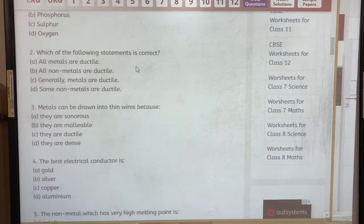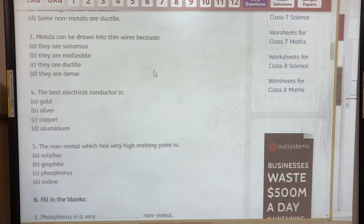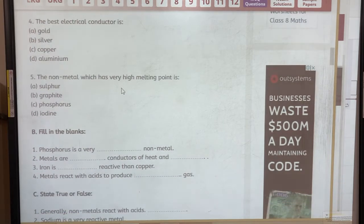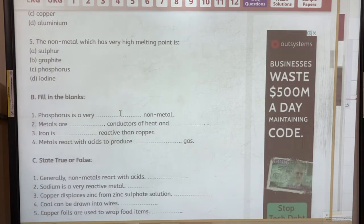Next question is which of the following statement is correct? I am not going to tell you this thing. You answer it and answer it in the comment section. Then metals can be drawn into thin wires because what is it? So you have to find the answer. The best electrical conductor is, if you watch my video I have told it to you. So you have to watch the previous one, the part one video. And next is the non-metal which has very high melting point. The non-metals, exceptions are always there and there is a non-metal which has a very high melting point. You need to find the answer.